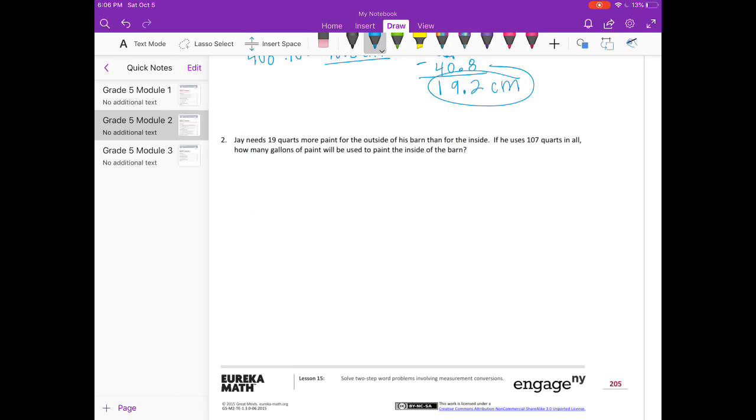Number two. Jay needs 19 quarts more paint for the outside of his barn than for the inside. If he used 107 quarts in all, how many gallons of paint will be used to paint the outside of the barn? So he needs 19 more to paint the outside than the inside, and total is 107. What I'm going to do is subtract this 19 from the 107 so that I can get two equal parts.